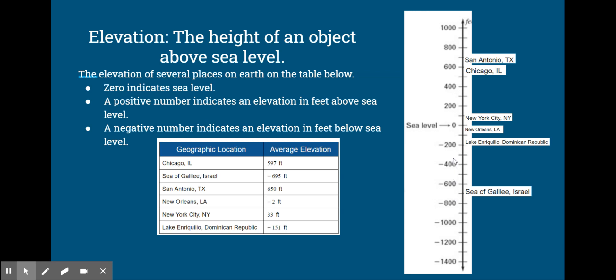Which location has the second lowest elevation? Look at your number line. We can see that Lake Enriqueo in the Dominican Republic is the second lowest in elevation.